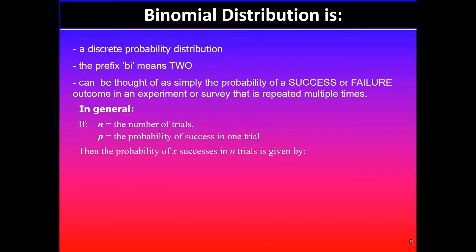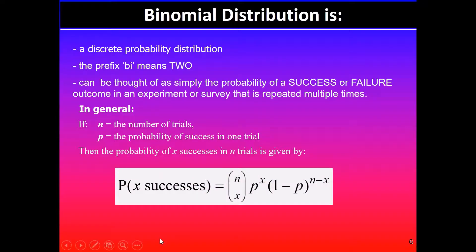then the probability of x successes in n trials will be given by the binomial distribution which is (n x). In this case this part here denotes the combination. We can also write nCx, probability of success p raised to the power of x, into (1-p) to the power of n minus x.